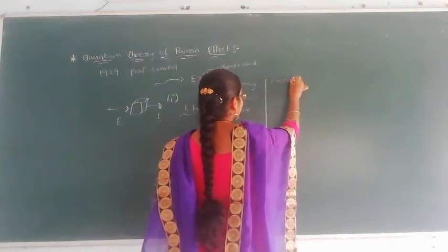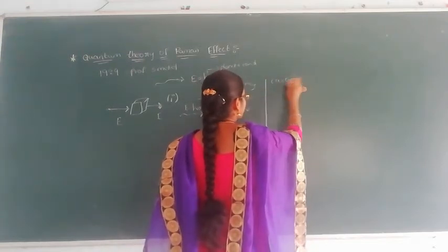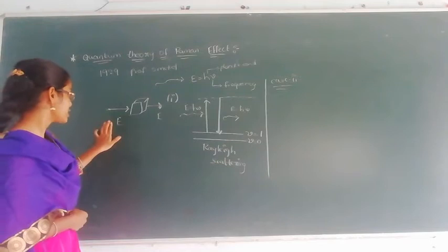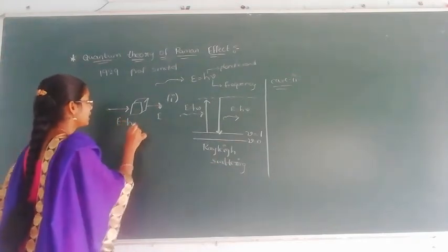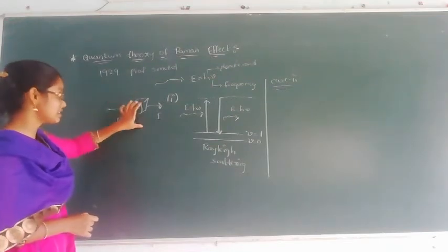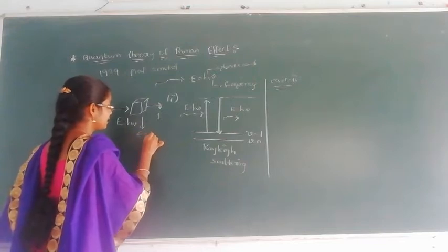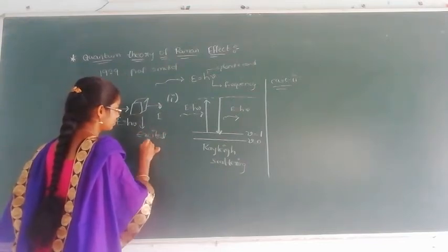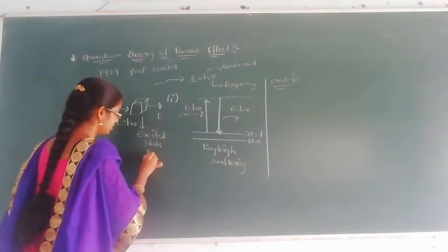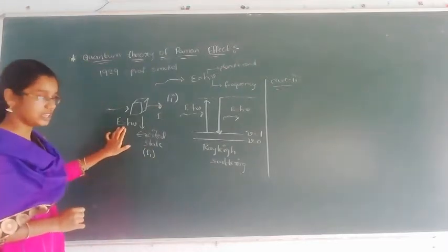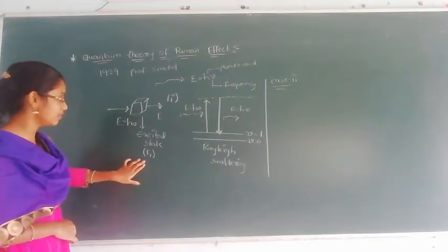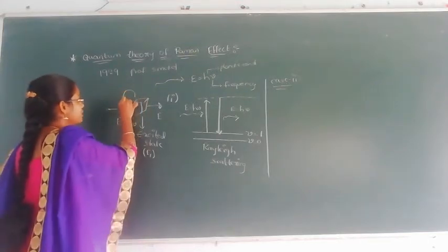Case 2: when a photon hits the molecule, let us consider that the molecule is already in the excited state. The molecule is in the excited state with energy E1. When a photon of energy E equals h-nu hits it, the molecule is in the excited state with energy E1.